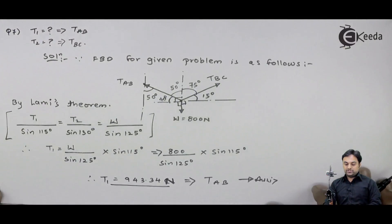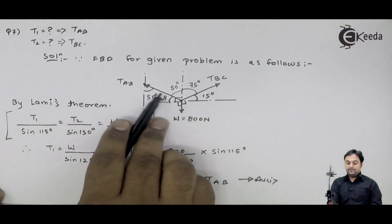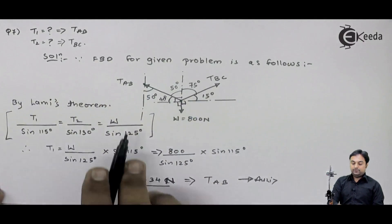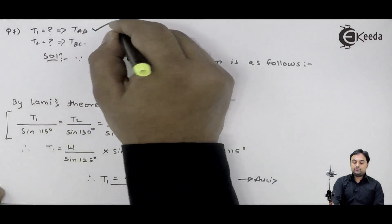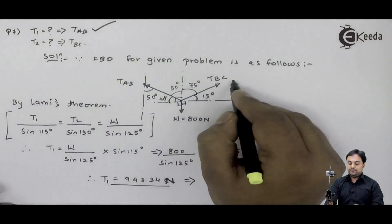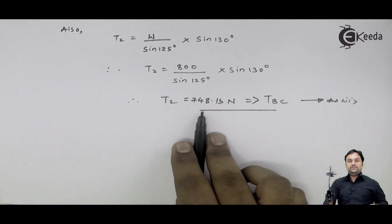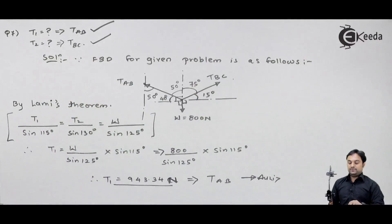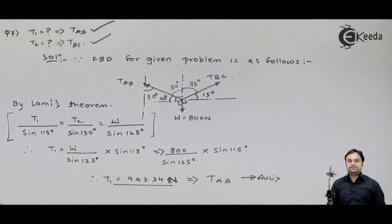So the first question was to calculate tension in AB. Tension in the string AB is 943.34 Newton. Question 1 solved. Second question was to calculate tension in BC. Tension in BC is 748.13 Newton. So T2 also has been calculated and with this question number 7 gets completed.